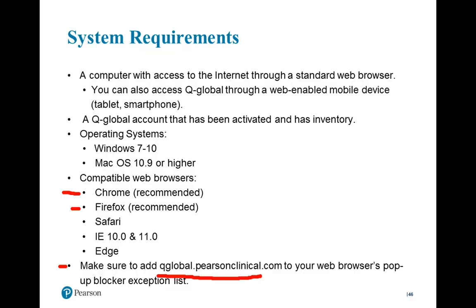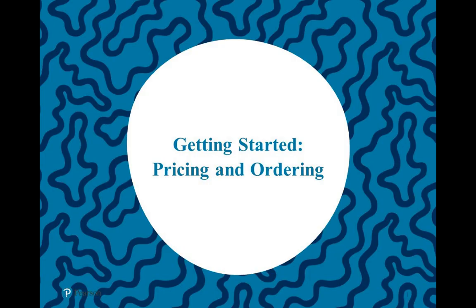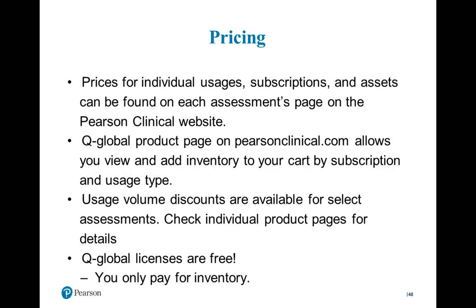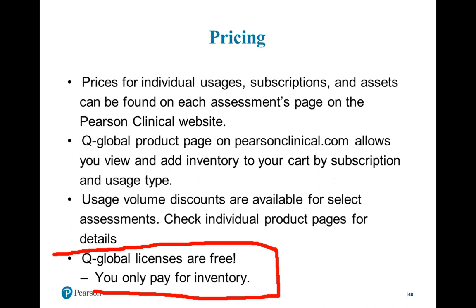In terms of getting started with Q-Global, prices for individual usages, subscriptions, and assets can be found on the assessments page on pearsonclinical.com. The Q-Global product page even allows you to add inventory to your digital cart, both subscriptions and usages. For select assessments, there are volume discounts on usages — depending on the number you purchase, the price per usage goes down. Q-Global licenses are free, so the only cost associated with the system is purchasing inventory: any assets, usages, or subscriptions.